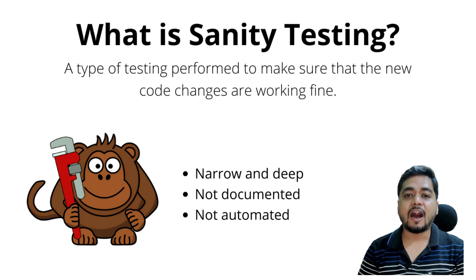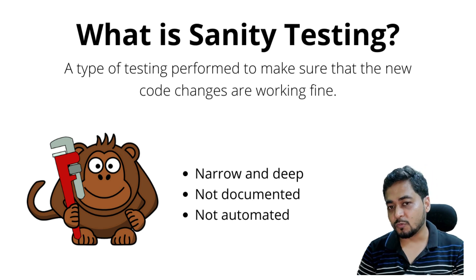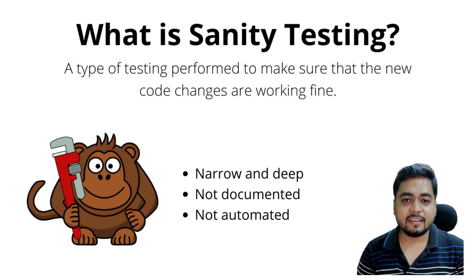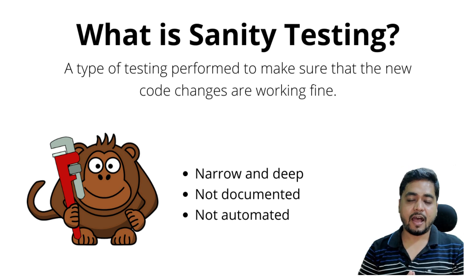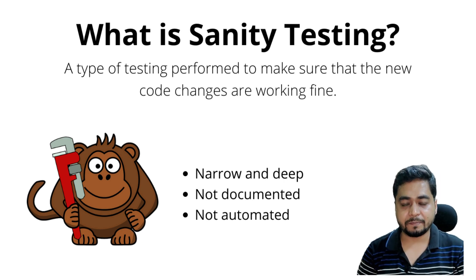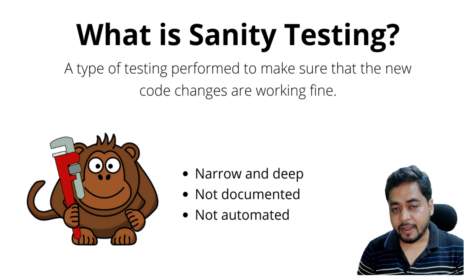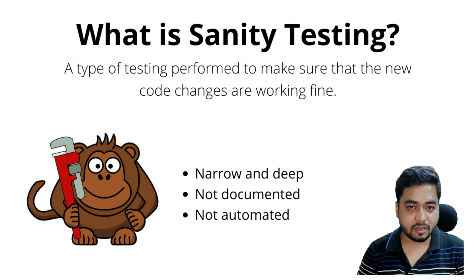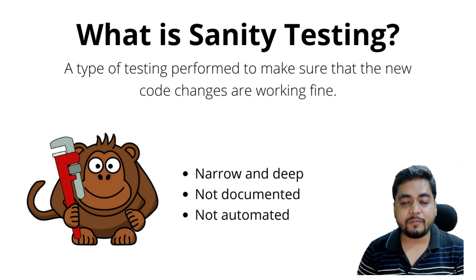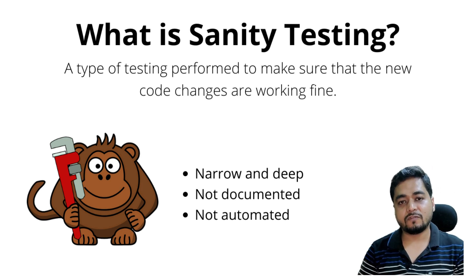Both smoke testing and sanity testing are essentially functional testing. To illustrate sanity testing with the e-commerce example: say a build introduces a new payment method. The complete sanity testing would check whether you are able to place an order using that new payment gateway, and then verify what kinds of payment methods are supported — debit card, credit card, UPI, wallets — and how many kinds of wallets are supported. These are examples of sanity testing for a payment gateway feature.